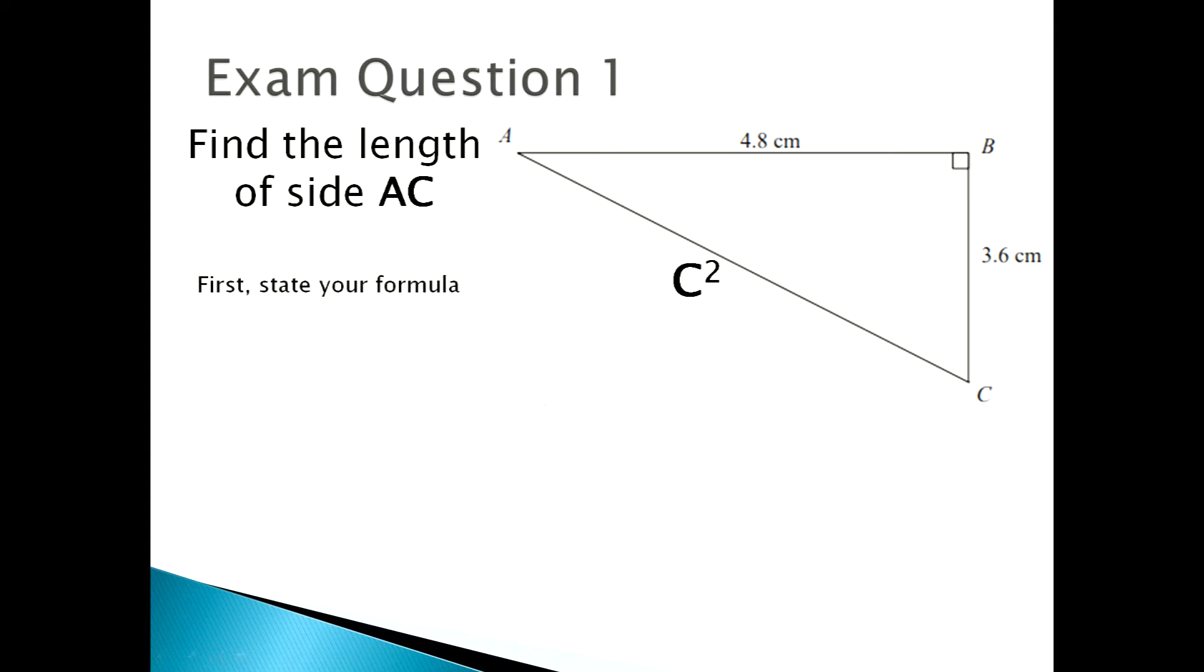First, state your formula. Always state your formula. Next, you substitute your given values. So your given values are 4.8 squared plus 3.6 squared equals c squared.